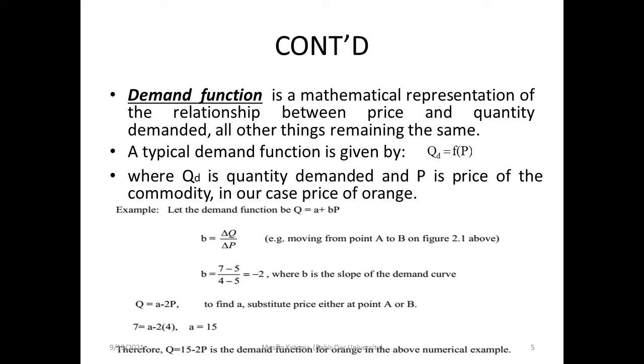The slope value b is negative, which means that the value of b in the demand function represents the inverse relationship between price and quantity demanded.